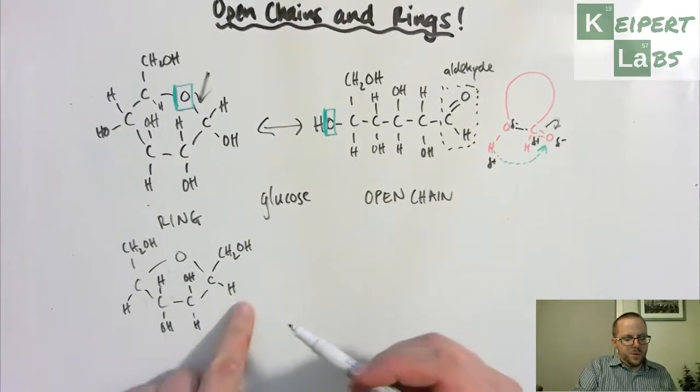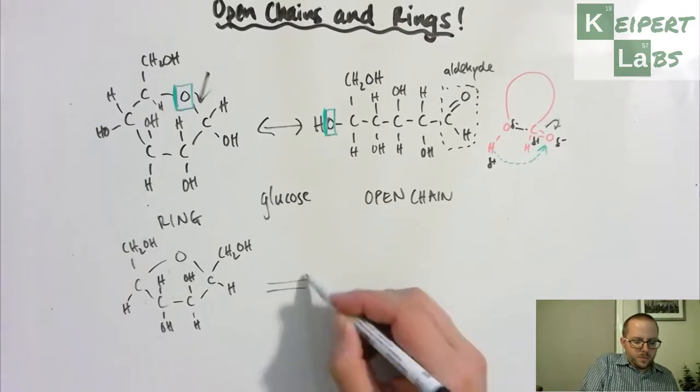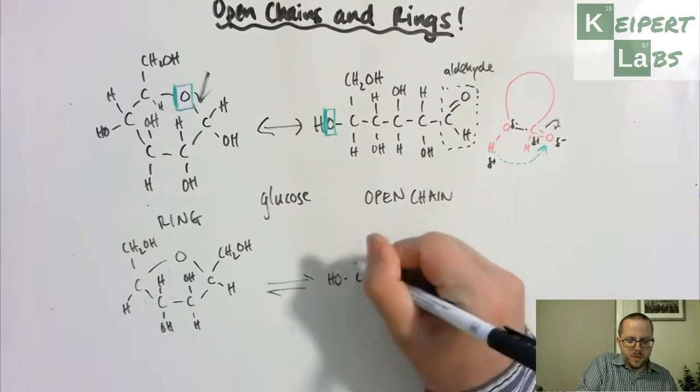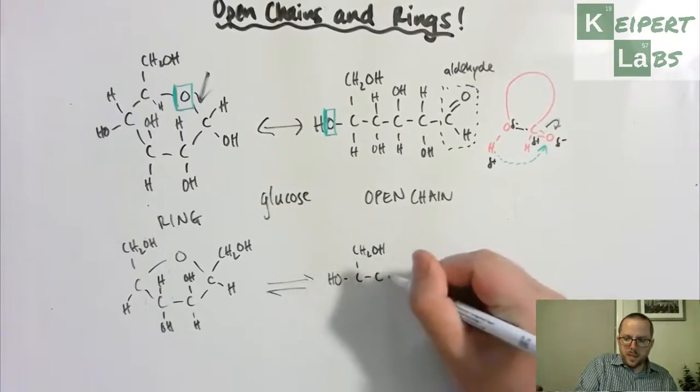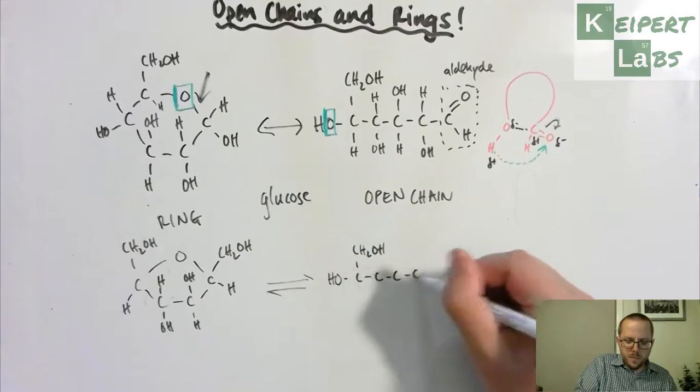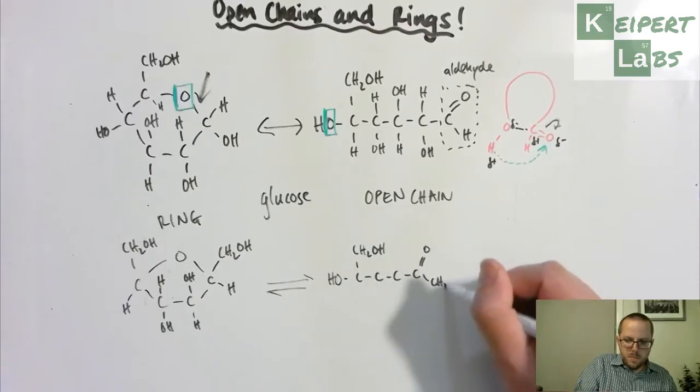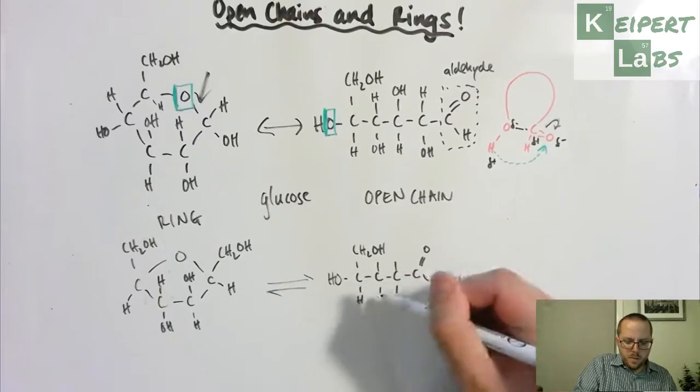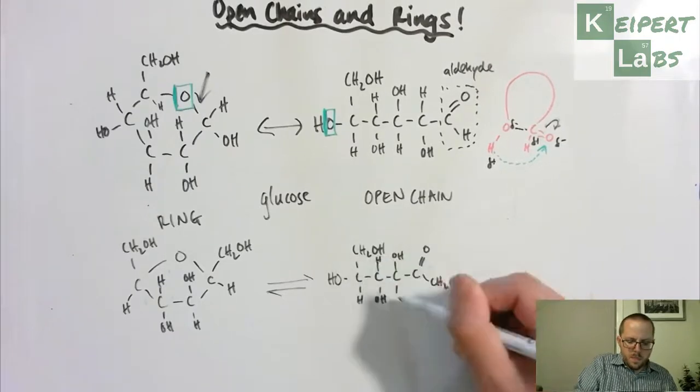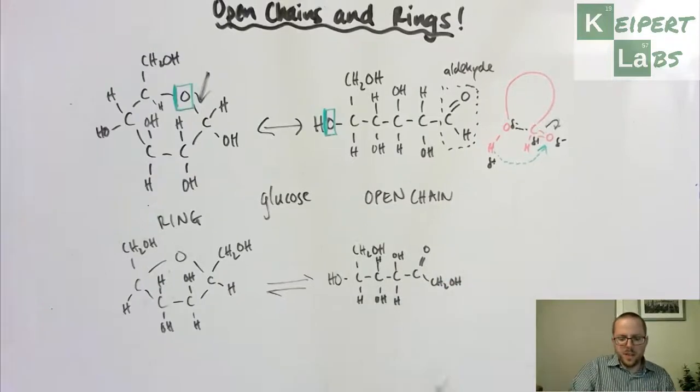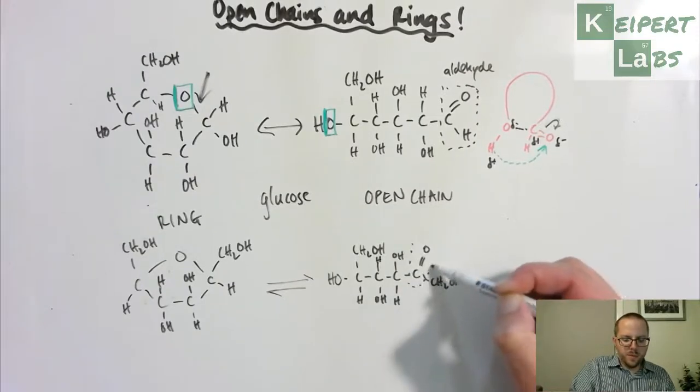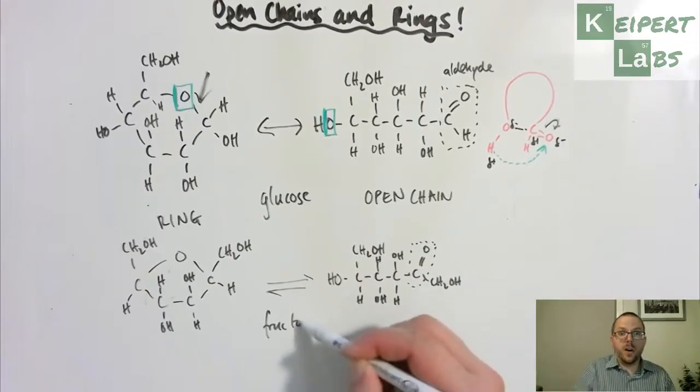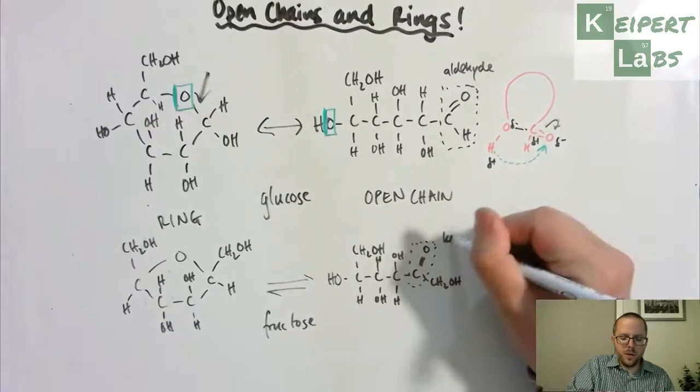And then we've got two CH2OH groups, but then we get the same sort of idea taking place over here. And so this is what our structure looks like. So you can still see that we have a group that's quite similar in fructose to the aldehyde group that we have in glucose but this is actually called a ketone group.